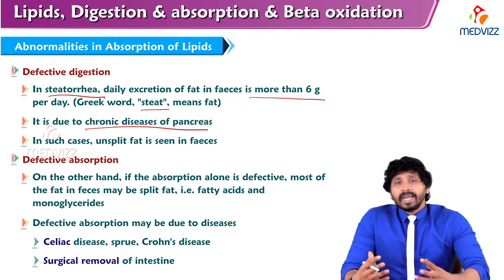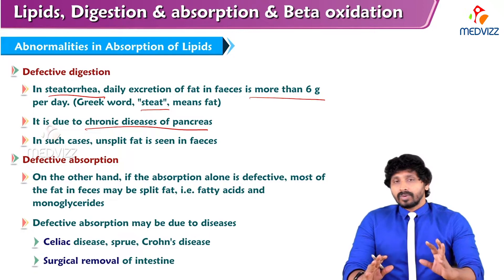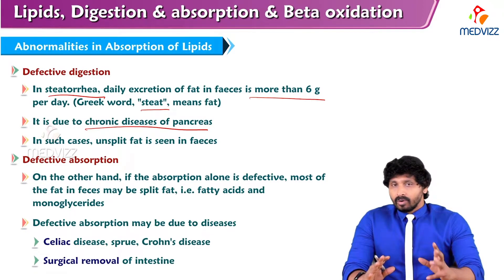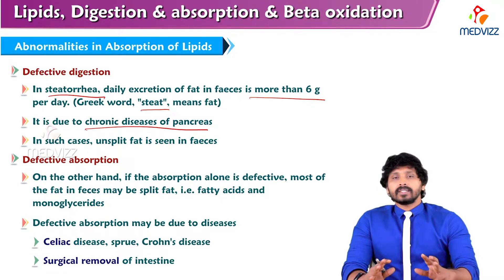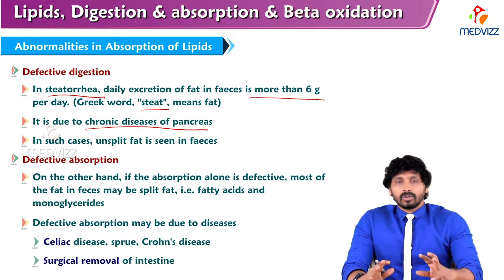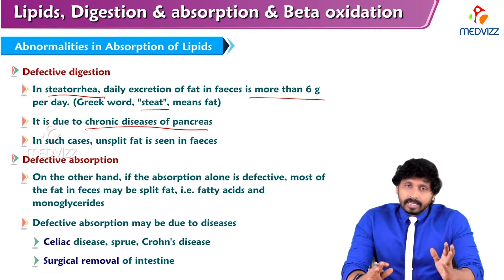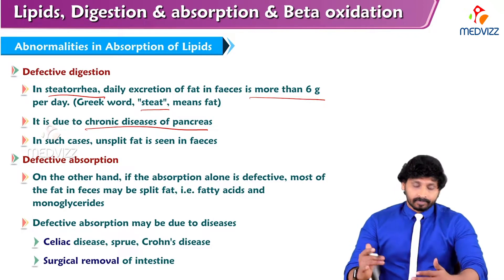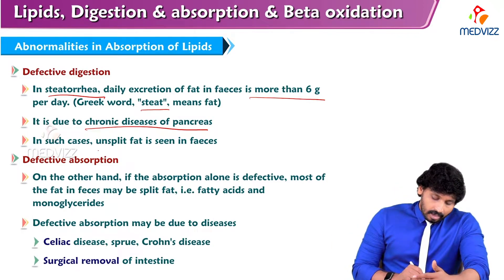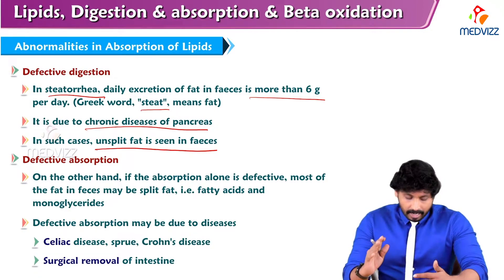Because the pancreas secretes the main lipid-degradative enzyme, pancreatic lipase, along with colipase. If the pancreas is not functionally active, it cannot secrete pancreatic lipase. If there is no pancreatic lipase, most of the triacylglycerols cannot undergo degradation and will pass into the large intestine as part of the fecal matter. In such cases, unsplit fat is seen in the feces — these are the defects of the digestion part.